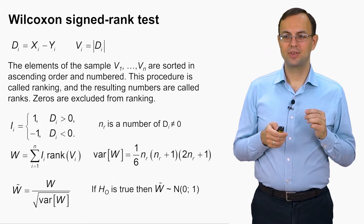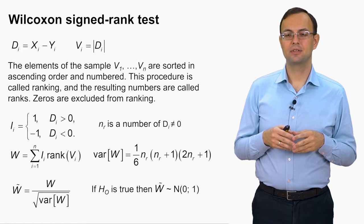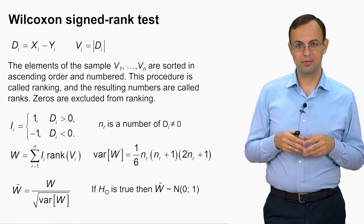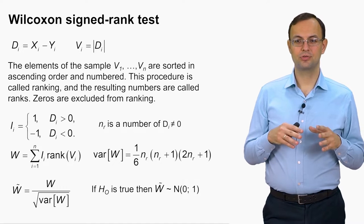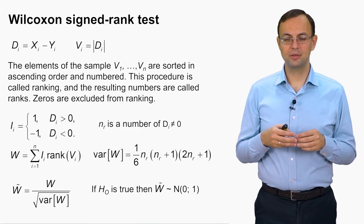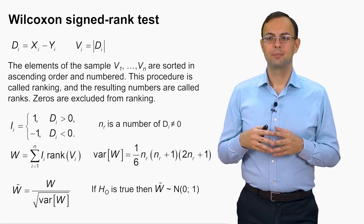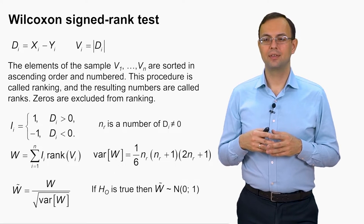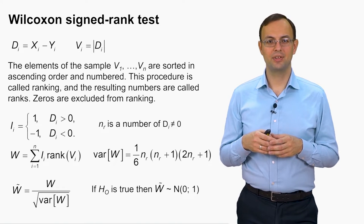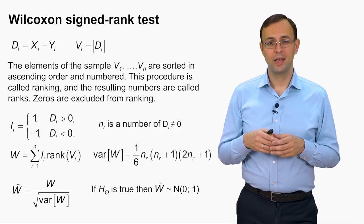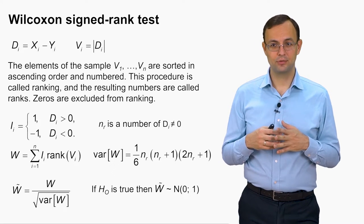And then it can be proved that this statistic W is asymptotically normal. And to make it not just normal but standard normal, we are to normalize it, to standardize it. So this can be done when we divide W by the square root of its variance.